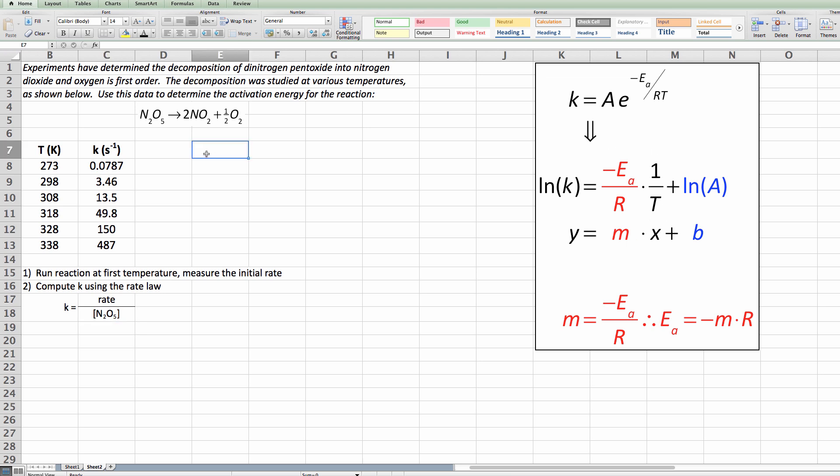So what we need is a y-axis set of data which is natural log of K and an x-axis set of data that's 1 over T. So what I'm going to do is I'm going to put right here 1 divided by temperature. Remember Excel likes to put its x-axis in the left-hand column and in the right-hand column of data it likes to make that the y-axis.